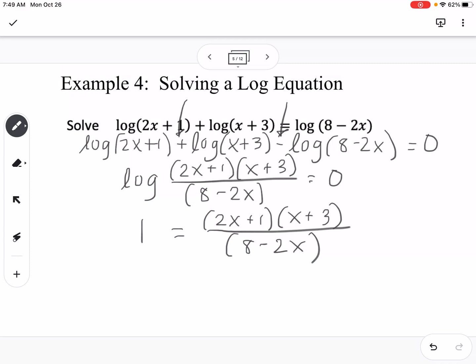If we have a fraction like this, we want to multiply by the denominator, so we're going to multiply both sides by 8 minus 2x. So then I have 8 minus 2x, and then I'm going to multiply out the 2x plus 1 times the x plus 3. If I multiply that out, I get 2x squared, I get 6x plus x, so it would be plus 7x plus 3.